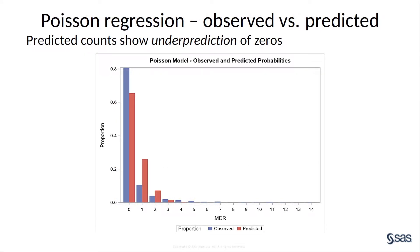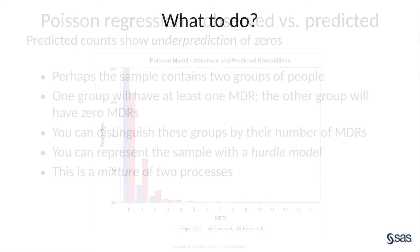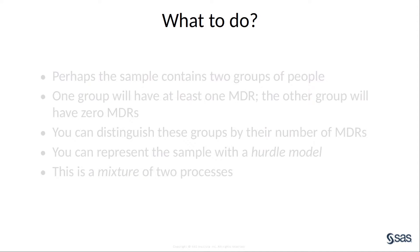You can get a sense of the over-dispersion by comparing the observed and predicted proportions of different counts. The bar chart indicates that the model has under-predicted the number of zeros. Also, because the predictions must go somewhere, the model has over-predicted other counts — the number of ones and twos. You've seen that the data have excess zeros for the Poisson model, but what can you do about it?